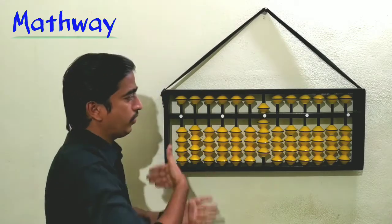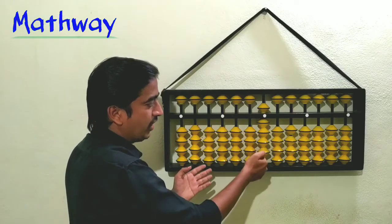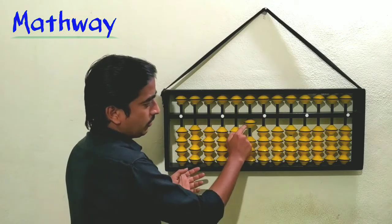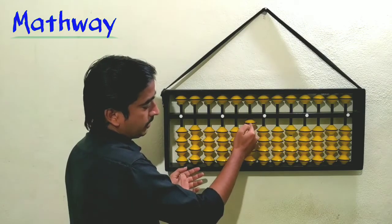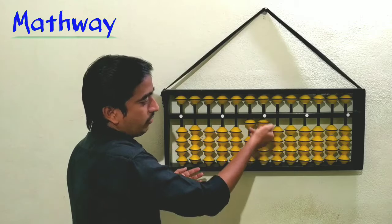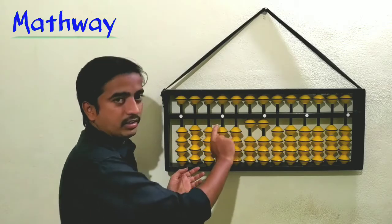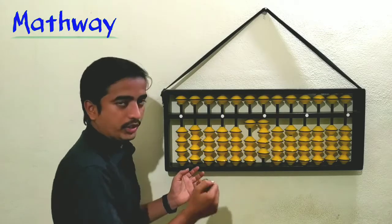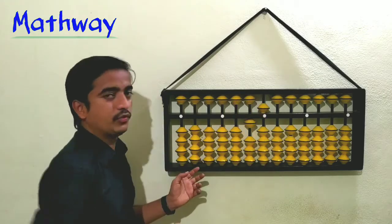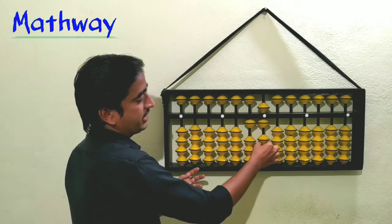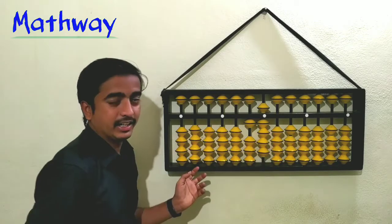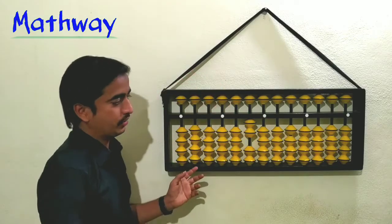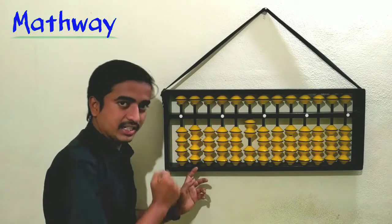Once the ones place is filled at nine, we move to the tens place. One bead on the tens rod plus one bead on the ones rod is eleven. Twelve, thirteen, fourteen, fifteen, sixteen, seventeen, eighteen, nineteen — we continue building up the ones place alongside the tens bead.